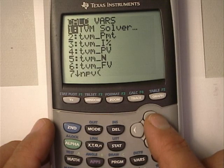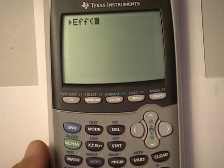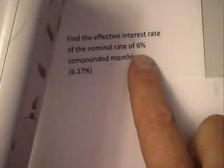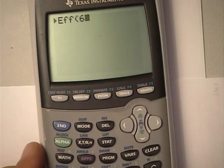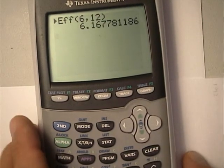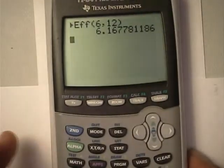Apps, finance, scroll up to EFF, and all you got to do is put in the nominal rate, and this time you can put exactly 6%, and how many compounding, so it's comma, the number of compoundings, and out comes the answer, 6.17.